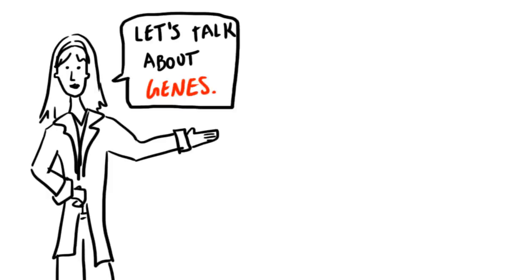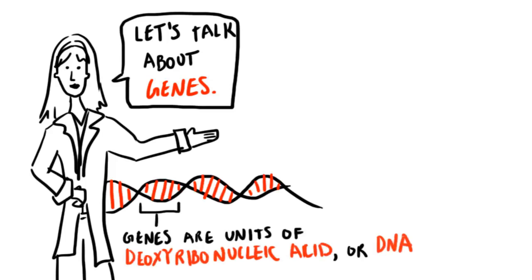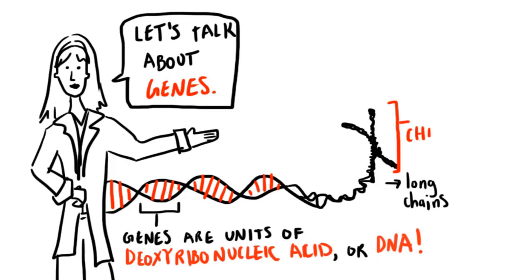Let's talk about genes. Genes are units of deoxyribonucleic acid, or DNA. Genes make up long chains of DNA, and one of these chains is called a chromosome. You have 46 chromosomes inside the nucleus of almost every single one of your cells.